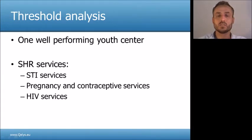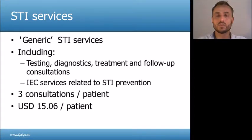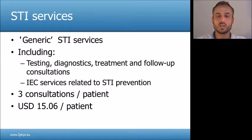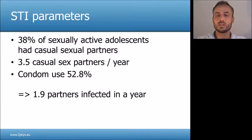The results of the threshold analysis present only one well-performing center, not the entire youth-friendly health services program. The threshold analysis measures break-even impact points for STI services, pregnancy and contraceptive services, and HIV services. We grouped the different STI services as generic STI services. The STI costs included testing, diagnosis, treatment and follow-up consultation, and also the cost of information, education and communication services related to STI prevention. In the youth-friendly health centers, a typical STI treatment consists of three consultations and average total costs were $15.06 per patient. Patients' out-of-pocket costs for medicines were excluded from the analysis.